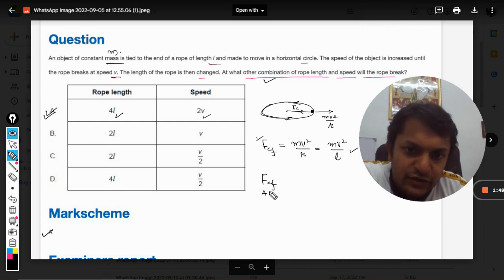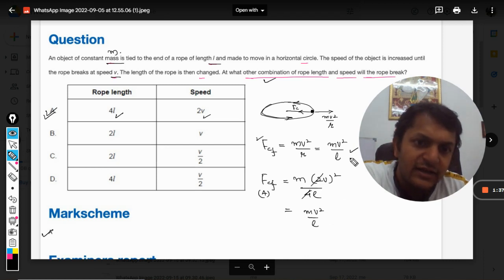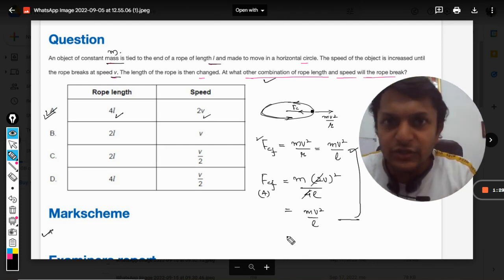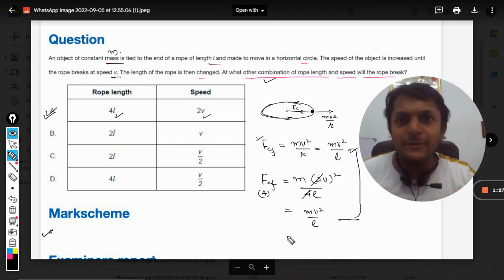It can be shown like this also: the centrifugal force in case A will be m(2v)²/(4L), so the square and 4 will get cancelled and these two forces are coming out to be equal to each other. So this is the point where the rope will break. With this, all the best, bye.